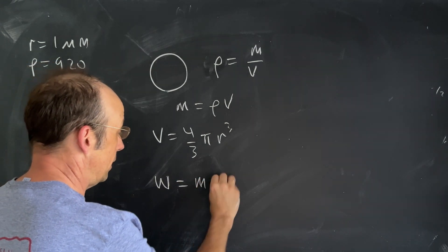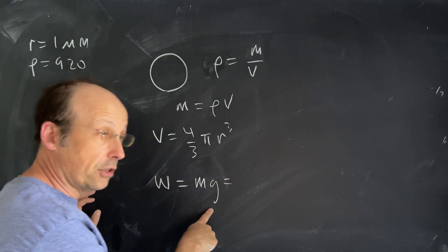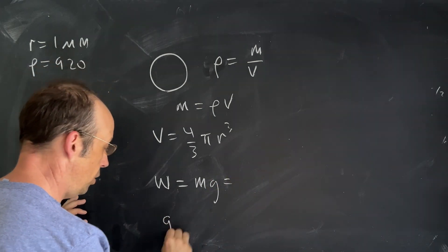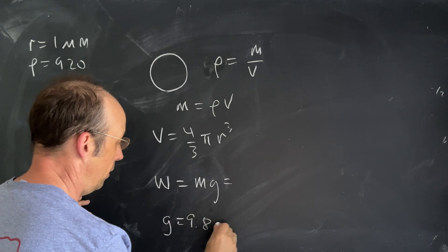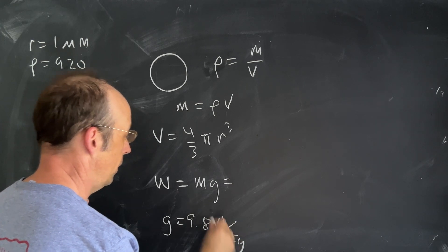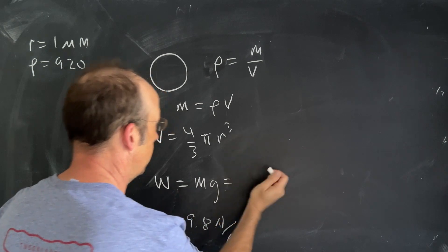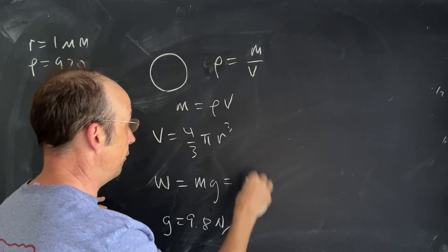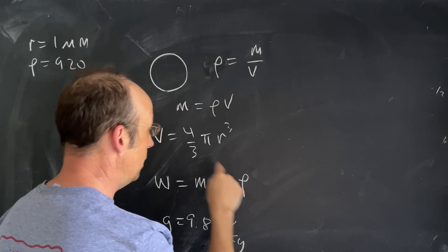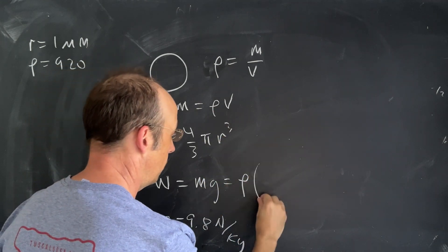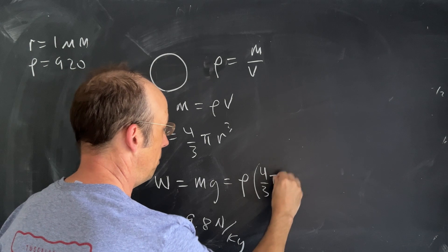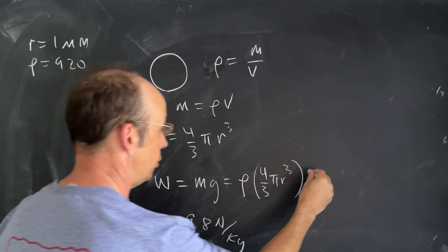Once I do that I can find the weight. The weight of the drop is just the mass times g, where g is the gravitational field, 9.8 newtons per kilogram. So this is going to be the density times the volume, four-thirds π r cubed, times g.